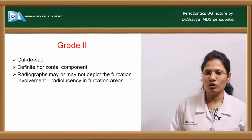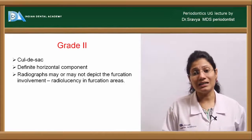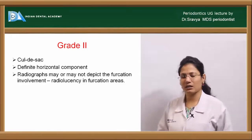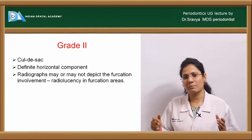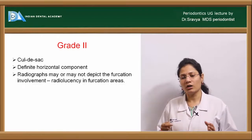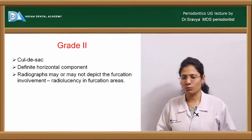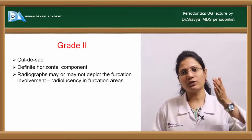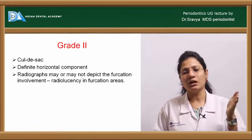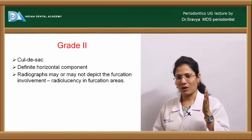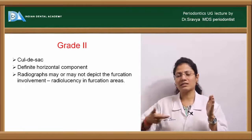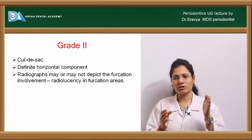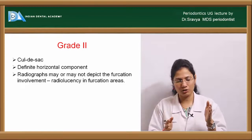Grade two shows a typical cul-de-sac appearance, with partial penetration of the furcation probe. One side of the furcation is blocked because interradicular bone remains intact on that side, while there is bone loss on the other side.